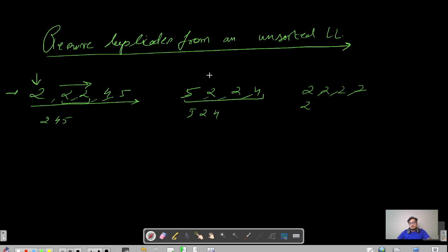Similarly, for 5, 2, 2, 4 — you consider just the first instance; if duplicates are present you remove them, so the output is 5, 2, 4. And for four 2s, it would reduce to just one 2. So how can we do this efficiently?